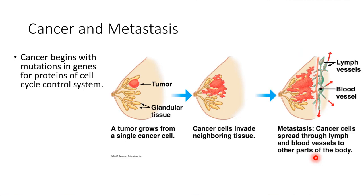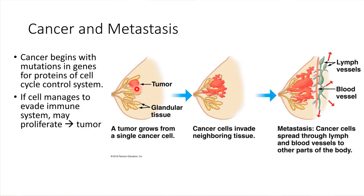Cancer essentially begins with a mutation in one specific cell. But if that cell continues to divide, it can end up forming what's called a tumor — a whole collection of cells that have that same problem, dividing when they actually shouldn't be. Cancers can grow larger, and a lot of times our immune systems can actually recognize cancerous cells and get rid of them.